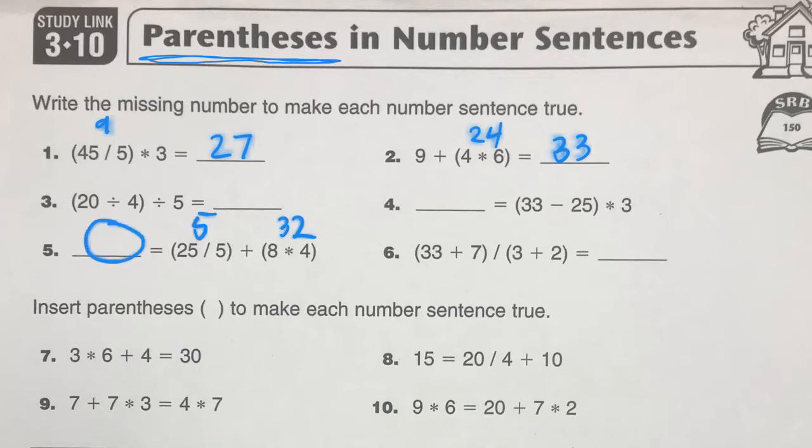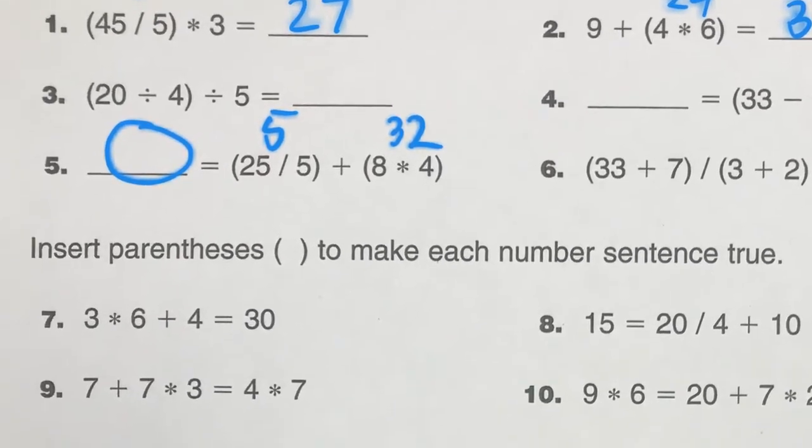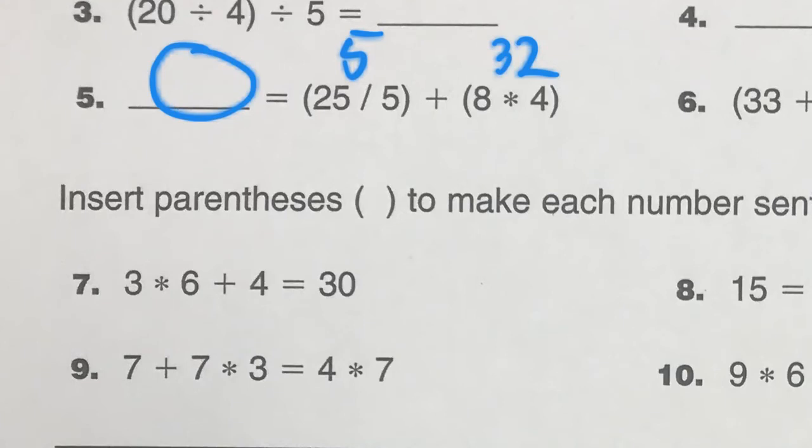And the other one, you can just do on your own. Now looking down at the next part, we have to put in parentheses to make the number sentence true. So let's see. I'm just going to try different places. If I put it here, 3 times 6 would give me 18. 18 plus 4 would be 22. That would not work. So let me try something else. If I put the parentheses here, now I have 6 plus 4 is 10. 3 times 10 is 30. That is good.